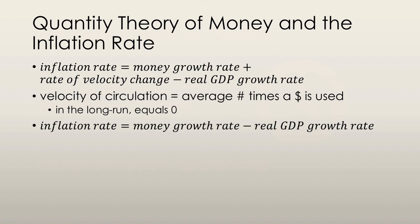The inflation rate can be calculated as the money growth rate plus the rate of velocity change minus the real GDP growth rate. But, in the long run, the velocity of circulation equals zero. So, in the long run, we can calculate the inflation rate as the money growth rate minus the real GDP growth rate.